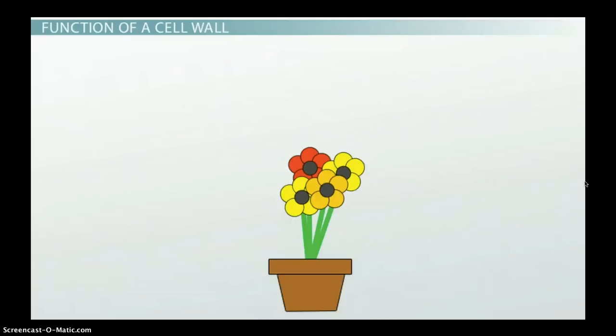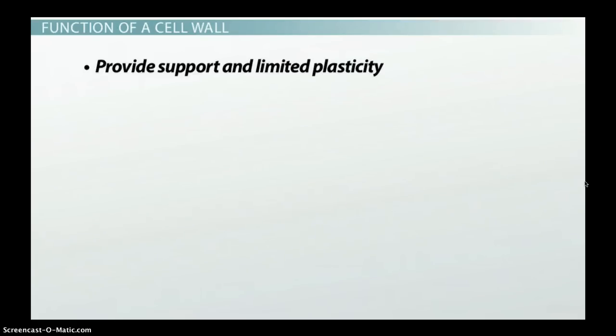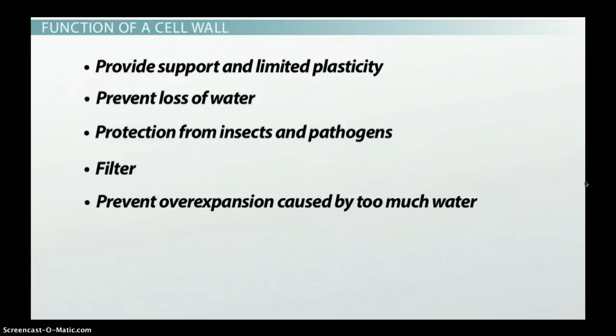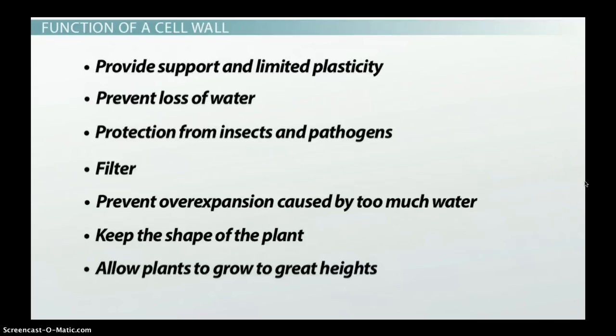Here is a list of the basic plant cell wall functions: Provide support and limited plasticity. Prevent loss of water. Protection from insects and pathogens. Filter. Prevent overexpansion caused by too much water. Keep the shape of the plant. Allow plants to grow to great heights.